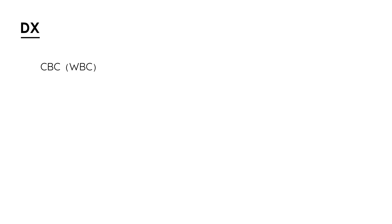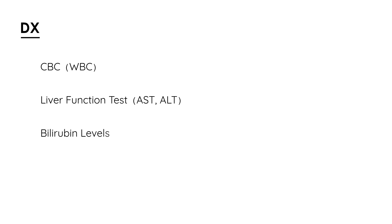To diagnose cholangitis, start with blood tests such as a CBC, which will show an elevated white blood cell count because this is an infection. Liver function tests — AST, ALT — and bilirubin levels are also useful, especially when working up jaundice. The test that actually visualizes the stone is a right upper quadrant abdominal ultrasound.